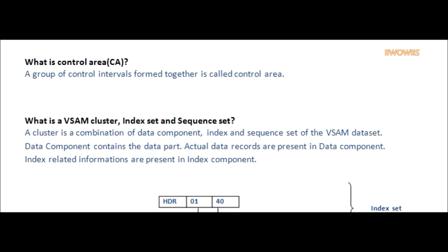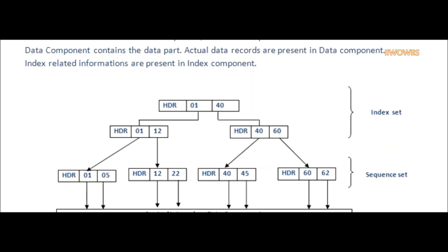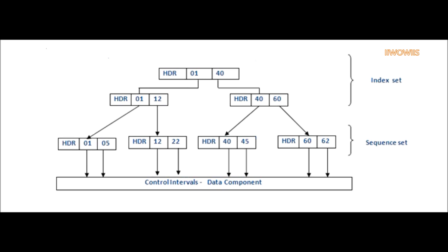Question: What is a VSAM cluster, Index Set, and Sequence Set? Answer: A cluster is a combination of Data Component, Index, and Sequence Set of the VSAM dataset. Data Component contains the actual data records. Index-related information is present in the Index Component. Index Set has multiple levels with pointers to the Sequence Set, pointing to the Control Area and Control Interval of the record being accessed. Sequence Set stores the Highest Record Key of each Control Interval, along with Primary Keys and Pointers to the Control Interval of the Data Component.